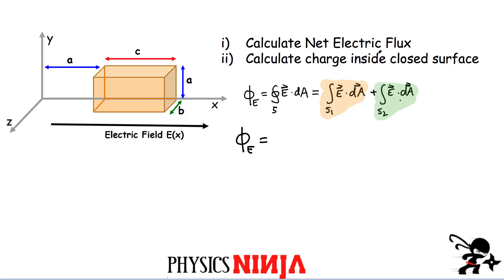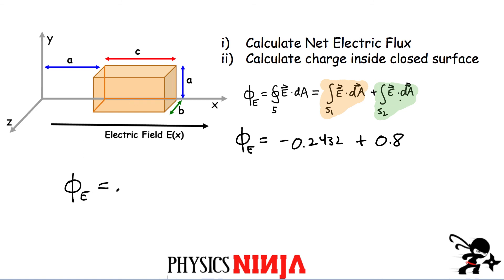We now go back to our first question: calculate the net electric flux. The net electric flux reduces to adding both terms together. The first term was negative 0.2432, plus the second term 0.8. So the net electric flux gives us 0.557 newtons per coulomb times meters squared. That is question one.